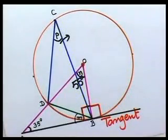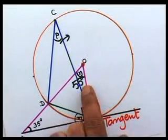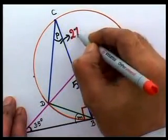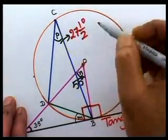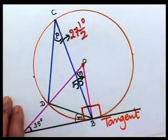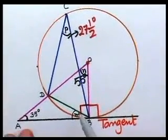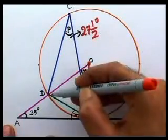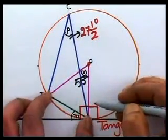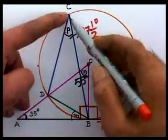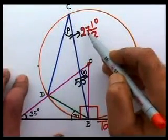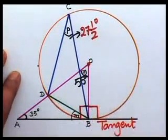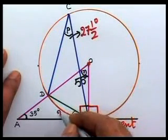Now think of m. Angle between tangent and the chord, that's m. The same chord is making an angle in the alternate segment which is 27 and a half. So m should be 27 and a half. The reason is the tangent-chord rule.